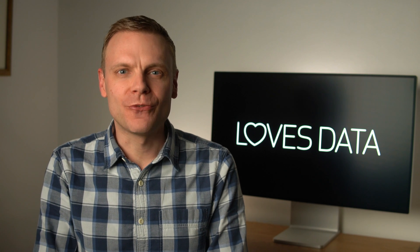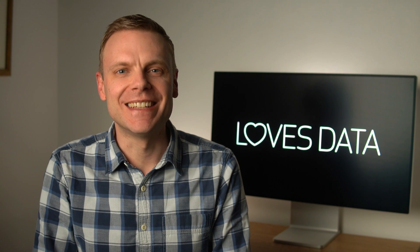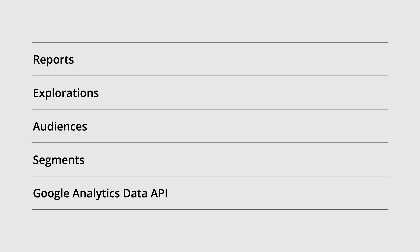You're probably wondering where you can find these conversion rate metrics in GA4. Google has said that the metrics will be available in the standard reports, exploration reports, audiences, segments, and the data API. These metrics, along with other metrics and dimensions we're about to talk about, are still rolling out to accounts, so I recommend keeping an eye out to see when they're added to your GA4 properties. I haven't seen them in my properties yet, but I'm sure they'll be added soon.